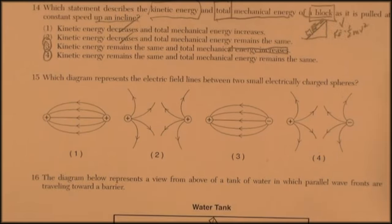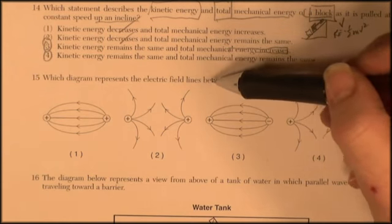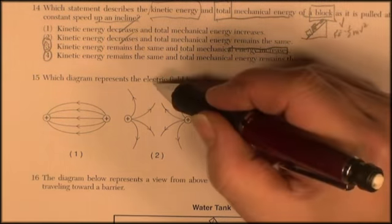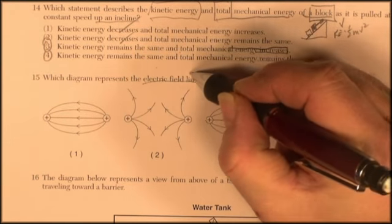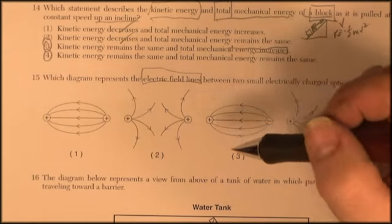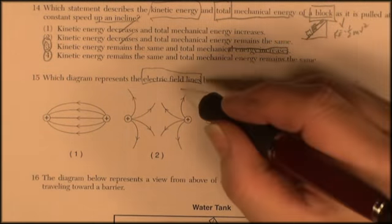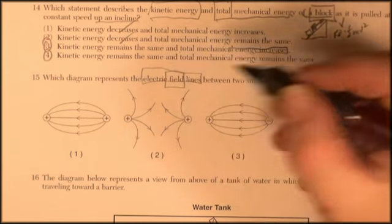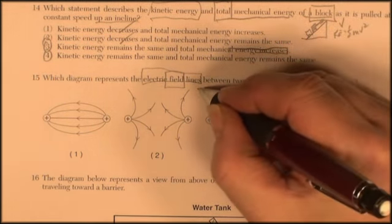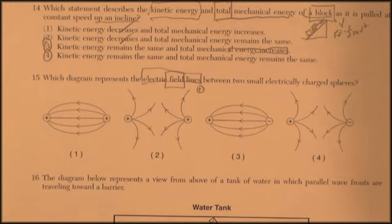Question 15. Which diagram represents the electric field lines between two small electrically charged spheres? Electric field lines are otherwise invisible lines of detectable force that you can detect with electricity. When you map these field lines by convention, which means everybody got together and agreed,